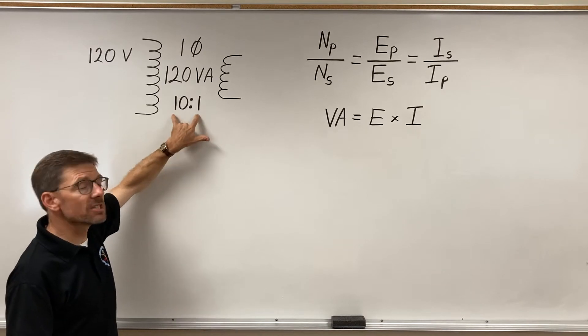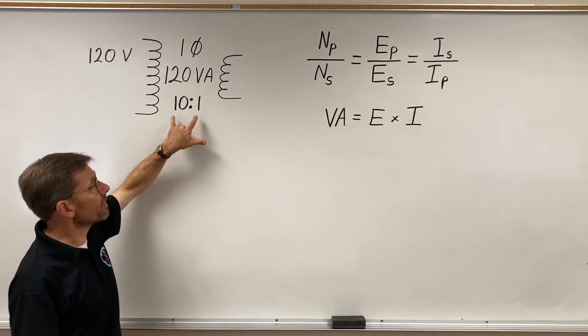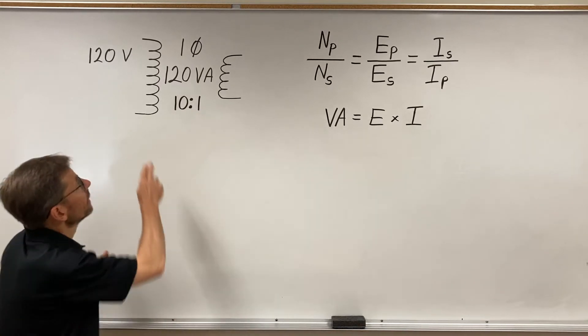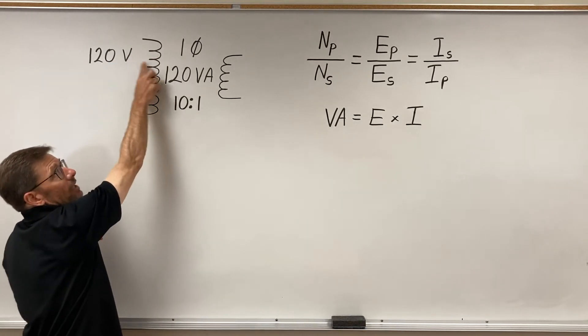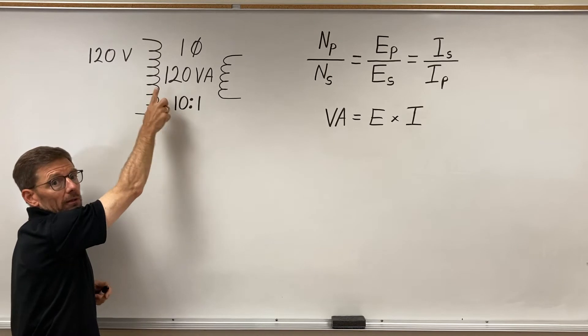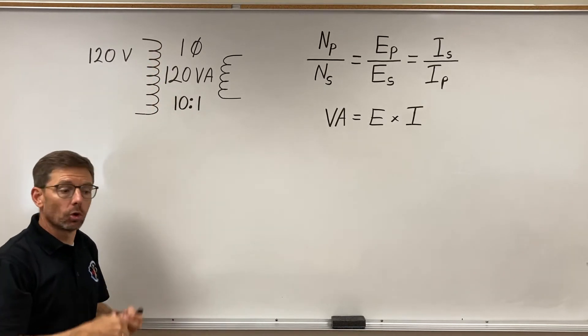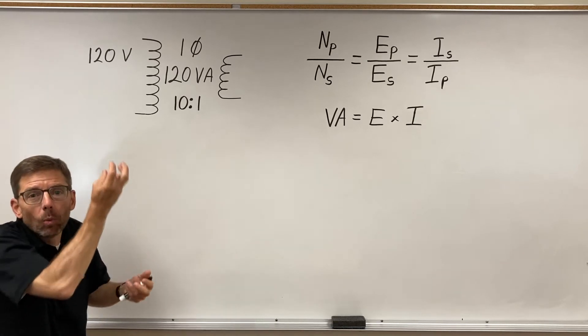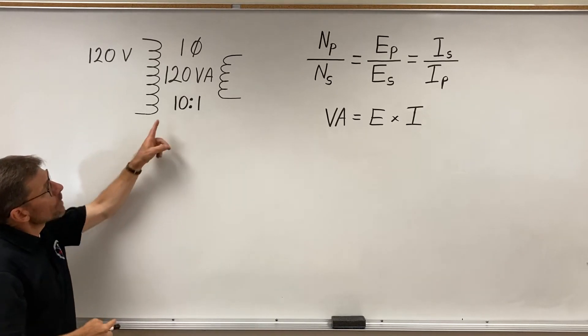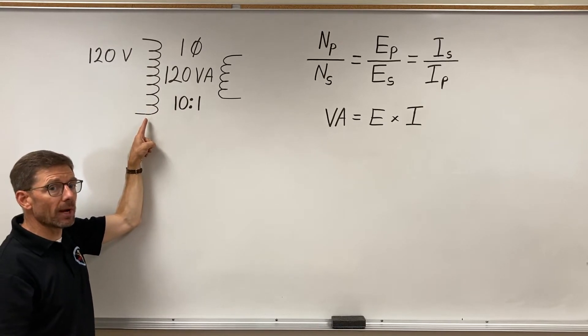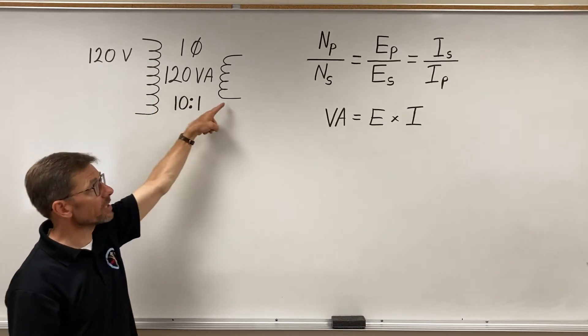The other number that's in the middle here deals with the turns ratio. A turn is when the wire comes in, it gets wrapped around the core. And each full wrap around the core is considered a turn or wrap. It's part of the winding. So, what this means is I have 10 times as many turns on the primary as I do on the secondary.